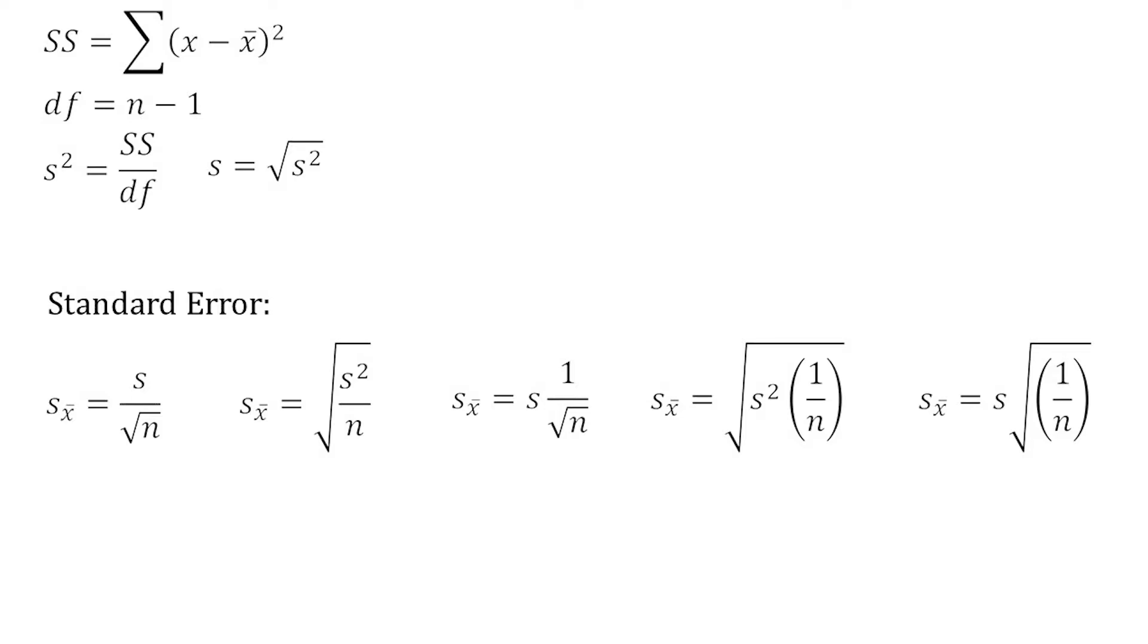Now I could write it in that simple way, or I could move things around so that things are mathematically equivalent, but the formula looks different. So for example, I could square the top and take the square root of both the top and the bottom. So now my standard error would be equal to the square root of the variance divided by n. Another way to do it is I could take the s out and multiply s times 1 over the square root of n. And that's mathematically equivalent as well.